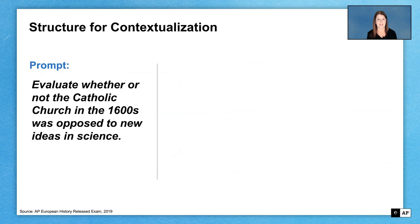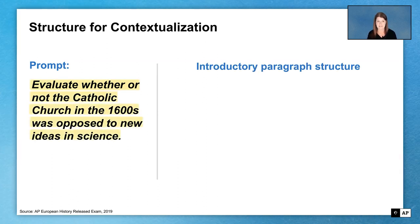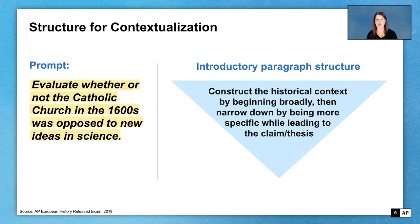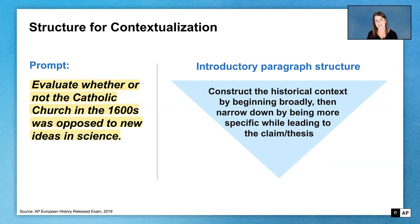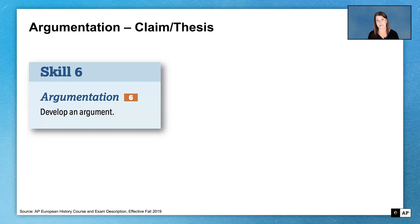Looking at our upside-down triangle with the prompt — evaluate whether or not the Catholic Church in the 1600s was opposed to new ideas in science — we really like starting broadly to construct the historical context, then narrowing down to be more specific heading toward the thesis claim. This structure works for both essays on the AP exam: the long essay, which we covered in the last video, and now the document-based question.